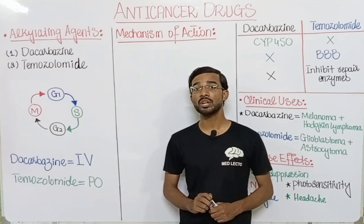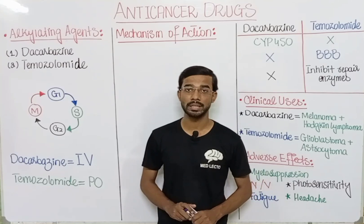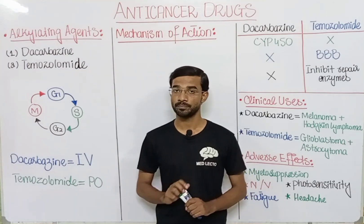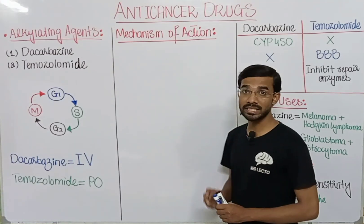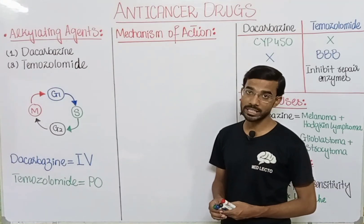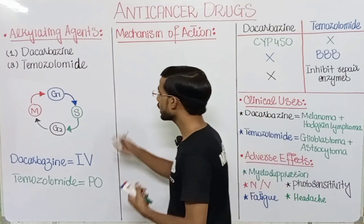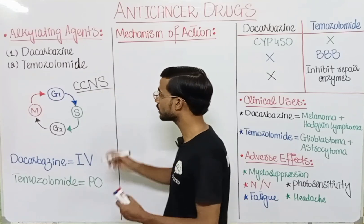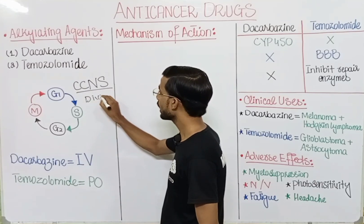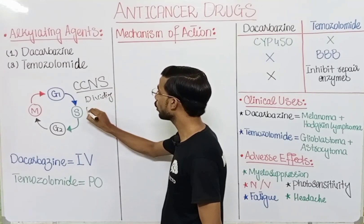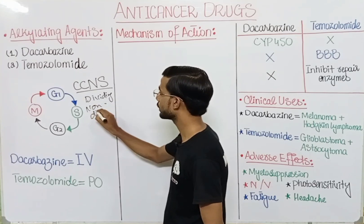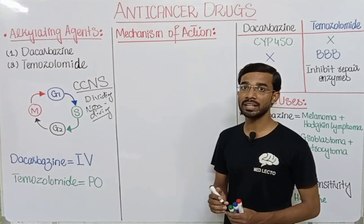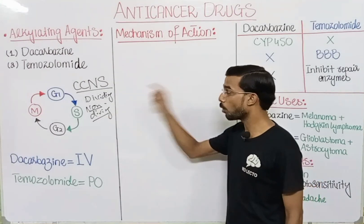In this lecture we will discuss two of the most important alkylating agents: dacarbazine and temozolomide. These drugs are cell cycle non-specific drugs, meaning they will act on both dividing and non-dividing cells, regardless of what phase the cell is in.